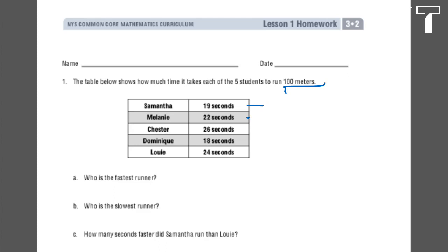So as we look through each of the students' times, we see that the least amount of time it took somebody was 18 seconds. So who is the fastest runner? Dominique.